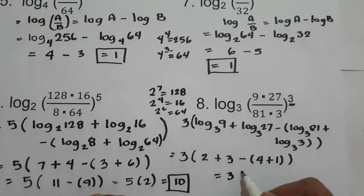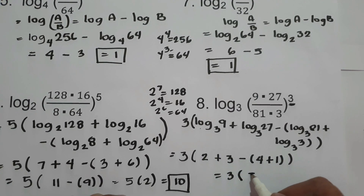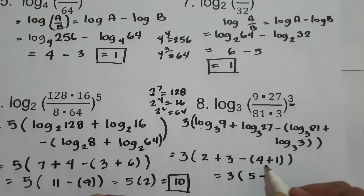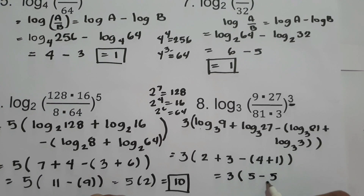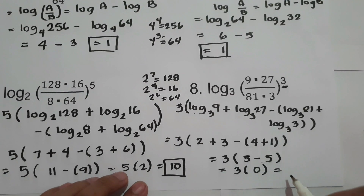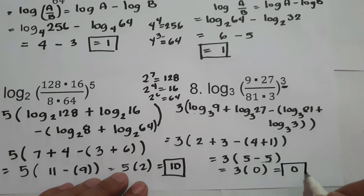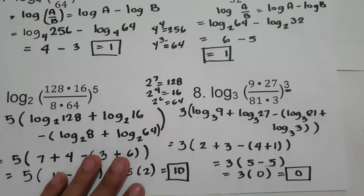Now we simplify: 3 times 2 is 6, plus 3 is 9 for the numerator terms, and 4 plus 1 is 5 for the denominator terms. So we have 3 times (5 minus 5), which is 3 times 0, giving a final answer of 0.